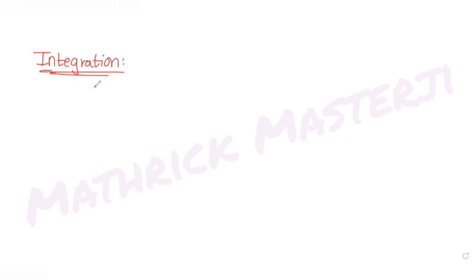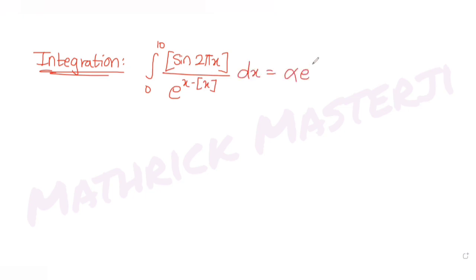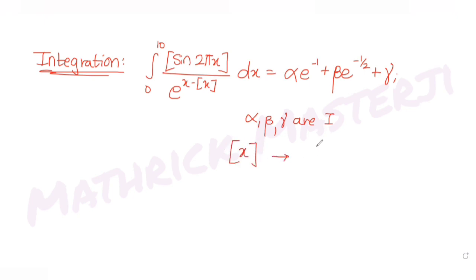Today's question is from the topic of integration. The integral has limits from 0 to 10, with the function being the greatest integer function of sine(2πx) divided by e raised to (x minus the greatest integer function of x), dx. This equals α·e^(−1) + β·e^(−½) + γ, where α, β, and γ are integers, and the square bracket denotes the greatest integer function less than or equal to x. We need to find α + β + γ.